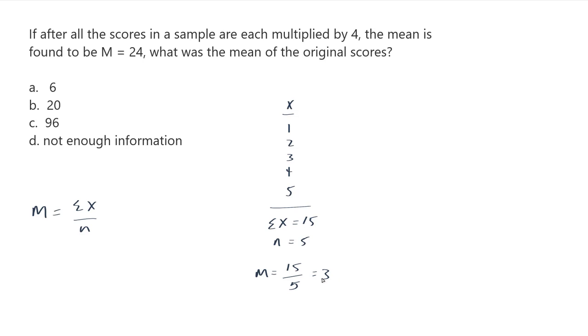Now let's try multiplication, like what they're talking about here. They're each multiplied by 4. If I multiply each one of these by 4, so I've got 1 times 4, that's 4. 2 times 4, that's 8. 3 times 4, that's 12. 4 times 4 is 16. And 5 times 4 is 20.